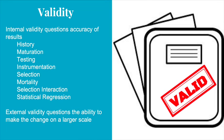The data gathered needs to be considered for validity — the quality of being factually sound. There are two types of validity for quasi-experimental research: internal and external. Internal validity questions the accuracy of the results. Problems that can affect internal validity are history, maturation, testing, instrumentation, selection, mortality, selection interaction, and statistical regression. For example, mortality affects research if the number of students tested is not consistent — students who leave or move to the school will affect the data.